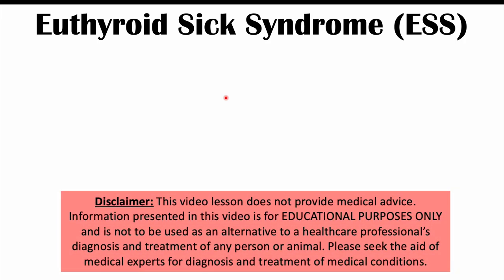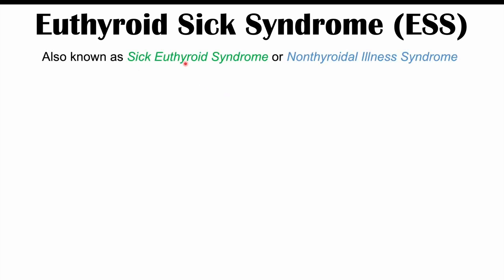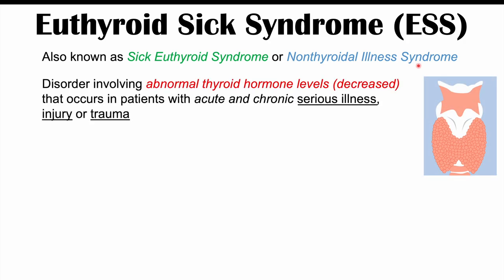Hi everyone. This lesson is on euthyroid sick syndrome. We're going to talk about what this is and why it occurs. Euthyroid sick syndrome is also known as sick euthyroid syndrome or non-thyroidal illness syndrome. It is a clinical finding involving abnormal thyroid hormone levels, which are often decreased, and it occurs in patients with acute and chronic serious illness, injury, or trauma.